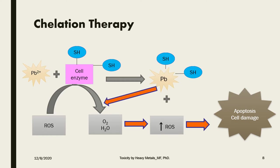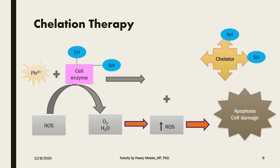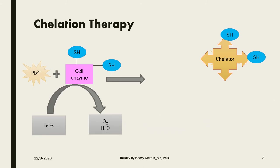To overcome this action, we use chelation therapy. When a chelating agent is given to a patient with lead toxicity, the chelators provide an SH group that attracts the heavy metal element. It binds to the chelating agent instead of binding to the cell enzymes, leading to activation of the cell enzymes for oxidation and reduction, decreasing reactive oxygen species and counteracting cell damage and apoptosis.